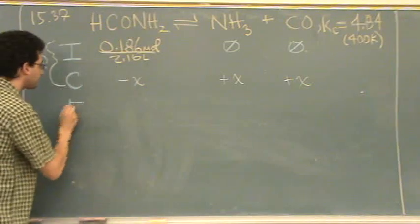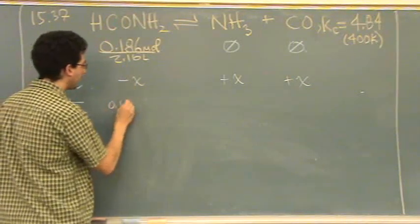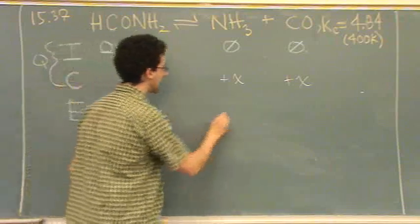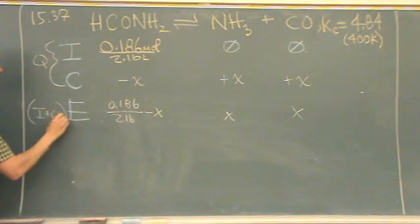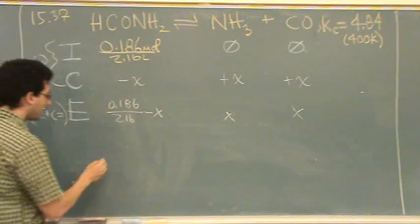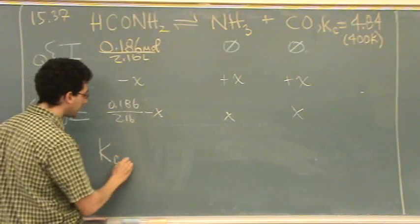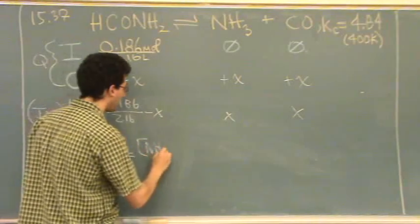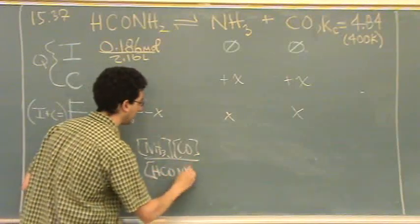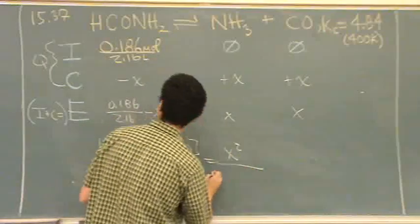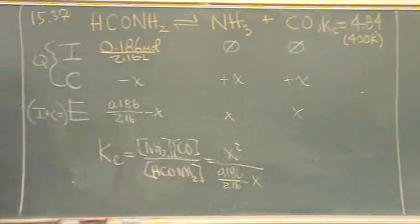Next is the E line — you just add the I and C lines together. So the equilibrium values are: 0.186 divided by 2.16 minus x for the reactant, and x and x for the products. Setting up Kc: Kc equals [NH₃][CO] over [HCONH₂], which gives x squared over 0.0861 minus x, where 0.0861 equals 0.186 divided by 2.16.